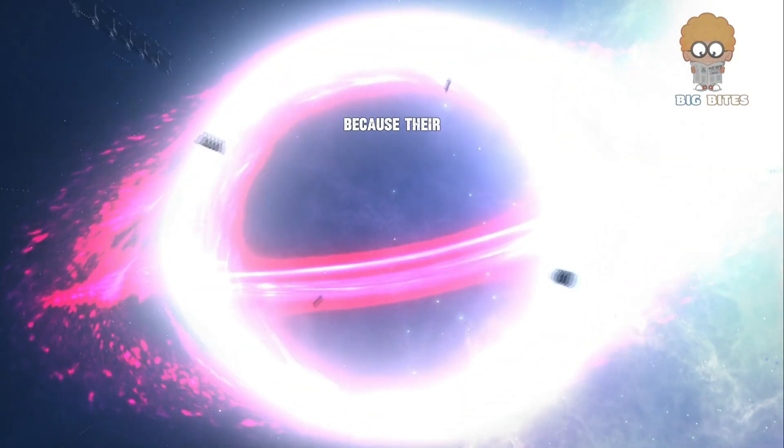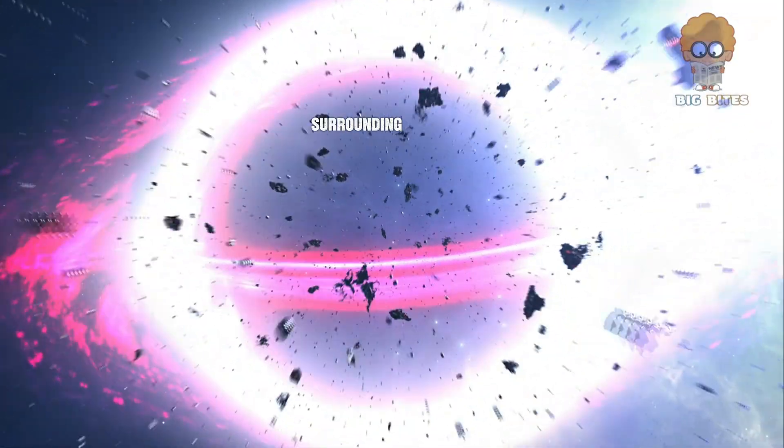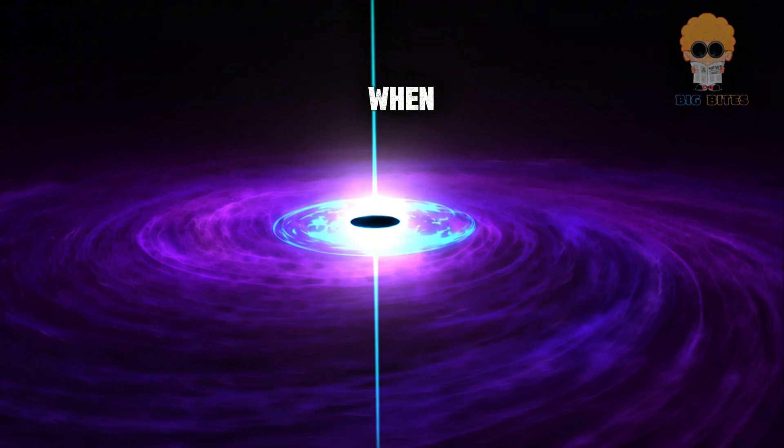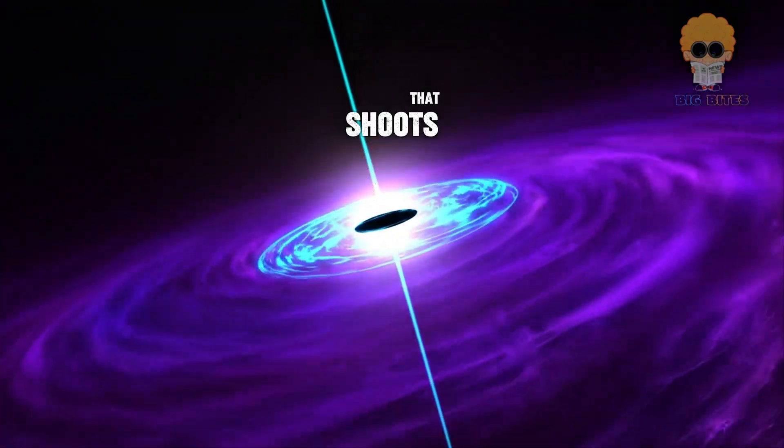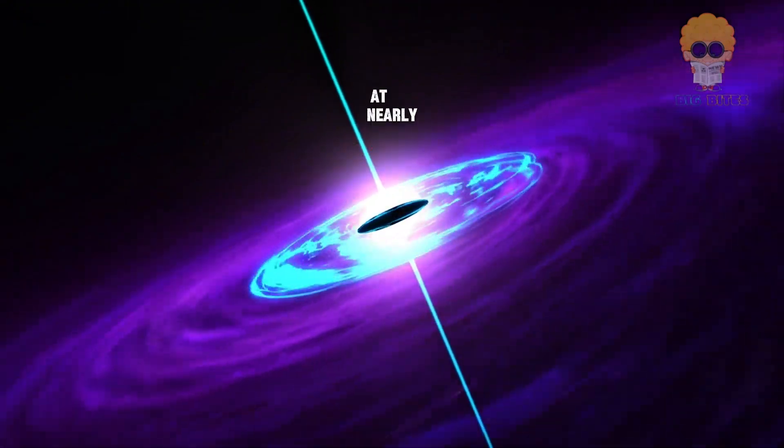Blazars shine brightly because their black holes are actively feeding on surrounding material. When a black hole pulls in gas, dust, or other cosmic material, it forms a high-energy jet that shoots out from the poles of the black hole at nearly the speed of light.